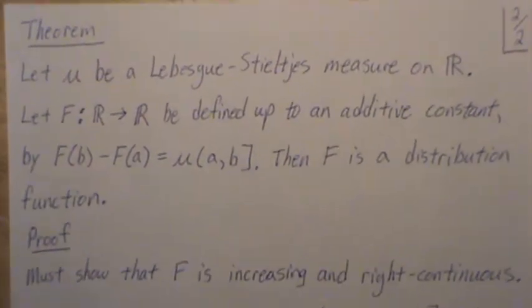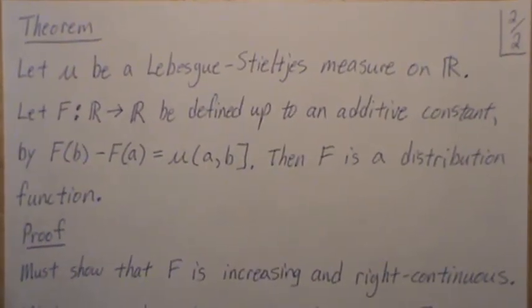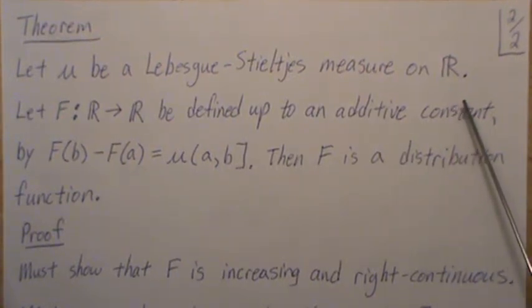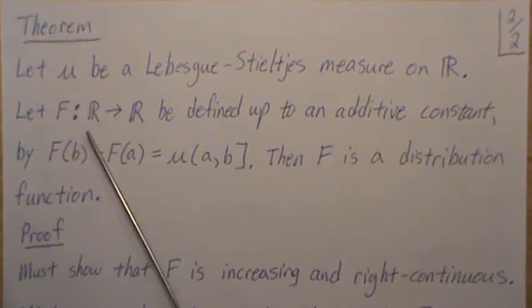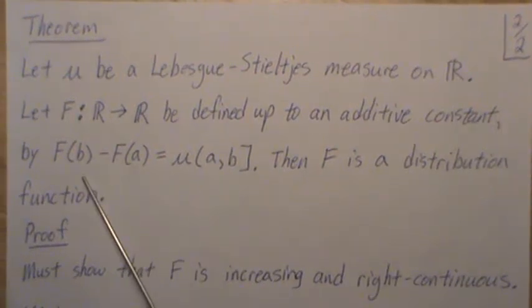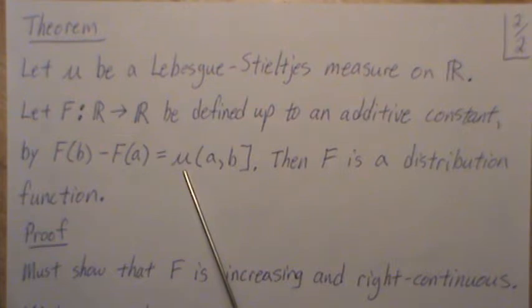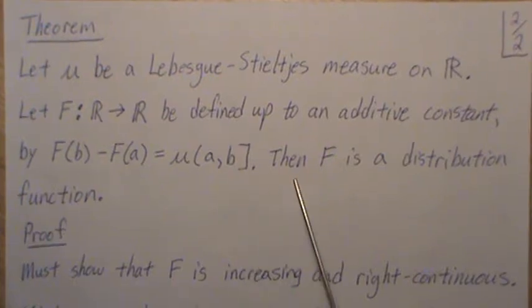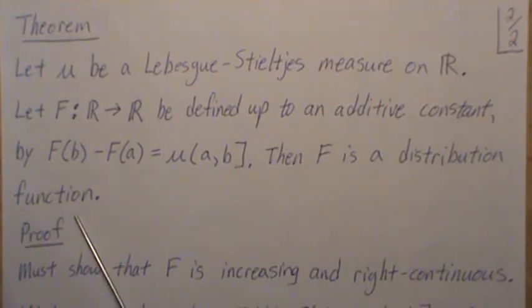First theorem is this: let μ be a Lebesgue-Stieltjes measure on the real number line. Let F be a function from the reals to the reals, just defined up to an additive constant such that F(b) - F(a) is the Lebesgue-Stieltjes measure on the right semi-closed interval (a,b]. Then F is a distribution function.